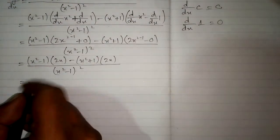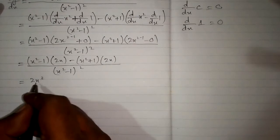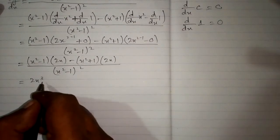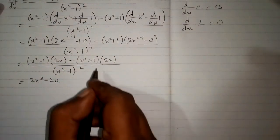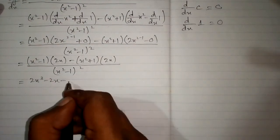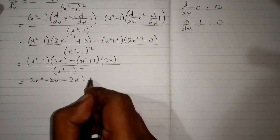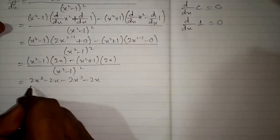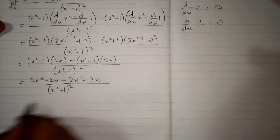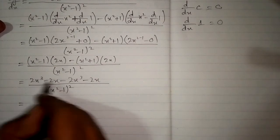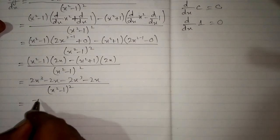Now we will open the bracket. So we have x square multiplied by 2x is 2x cube, and then minus 1 multiplied by 2x is minus 2x. Then minus 2x cube, and then minus 2x upon x square minus 1 whole square. And 2x cube minus 2x cube is 0, and minus 2x minus 2x is minus 4x.